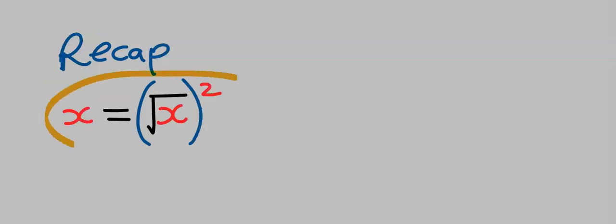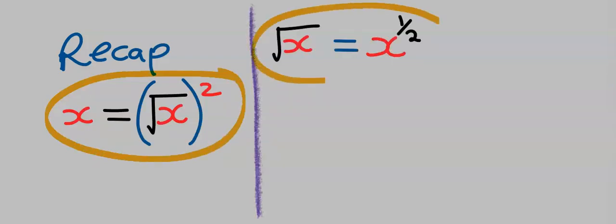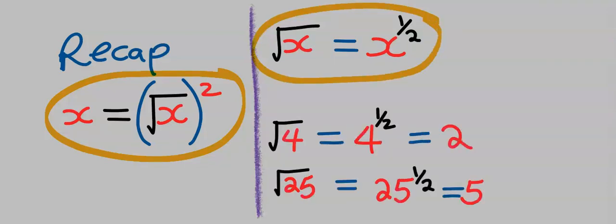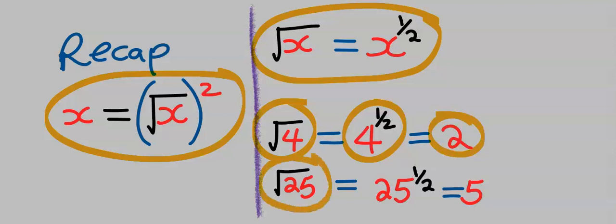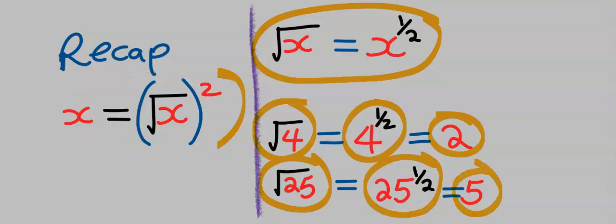Before we continue with step two, let's recap. In mathematics, these two are the same. Likewise, square root of x is the same thing as x to the power of one over two. The square root of four is the same as four to the power of one over two, which equals two. Likewise, the square root of 25 is the same as 25 to the power of one over two, which equals five.